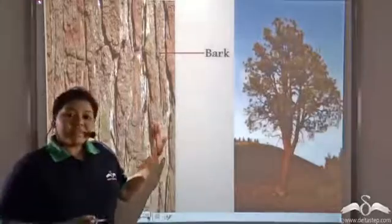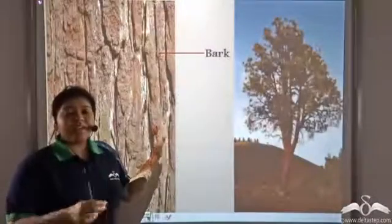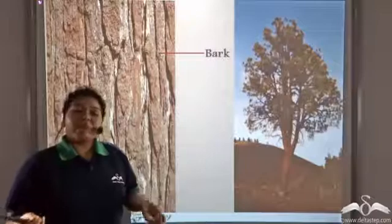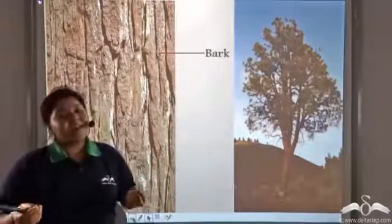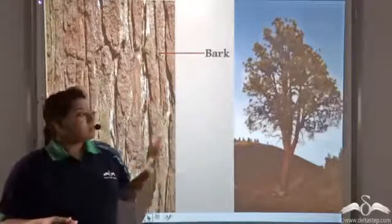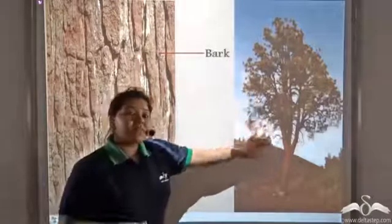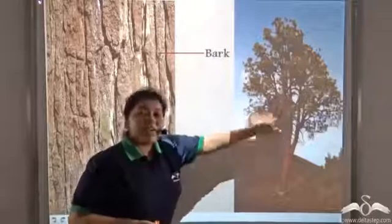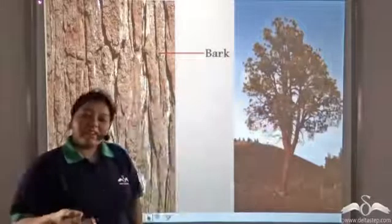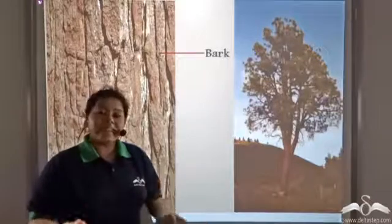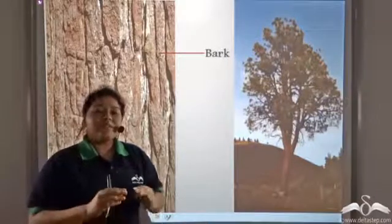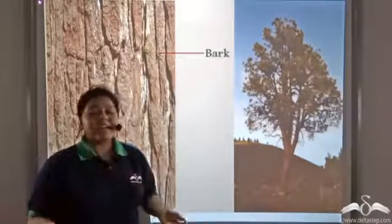So this epidermal layer in the young sapling was a single layer formed of parenchyma cells. Now parenchyma cells are living cells, but when the young sapling grows into a huge tree over time, the parenchyma cells die and they form sclerenchyma cells which have a thick and lignified cell wall.